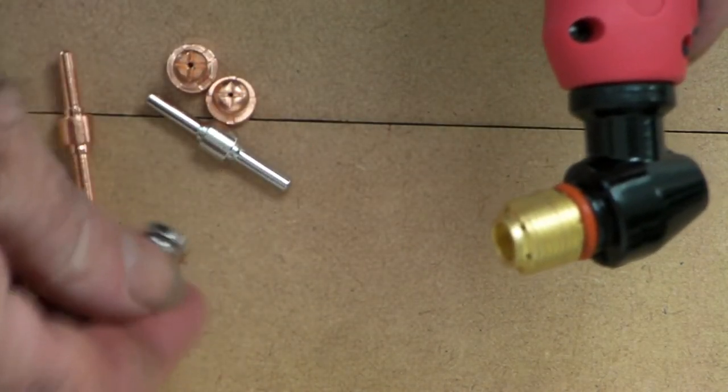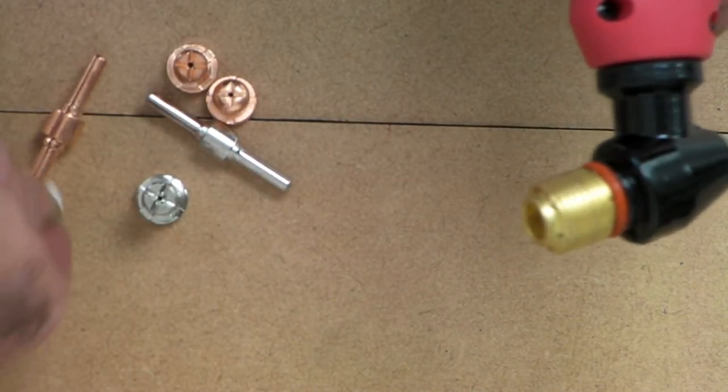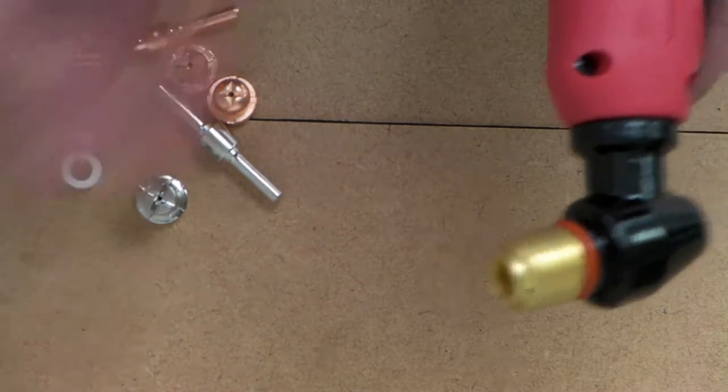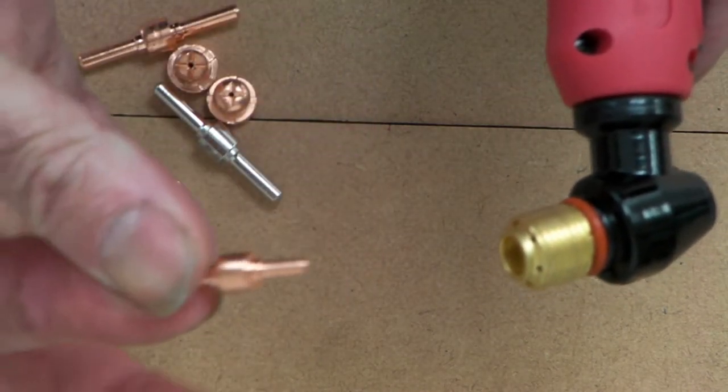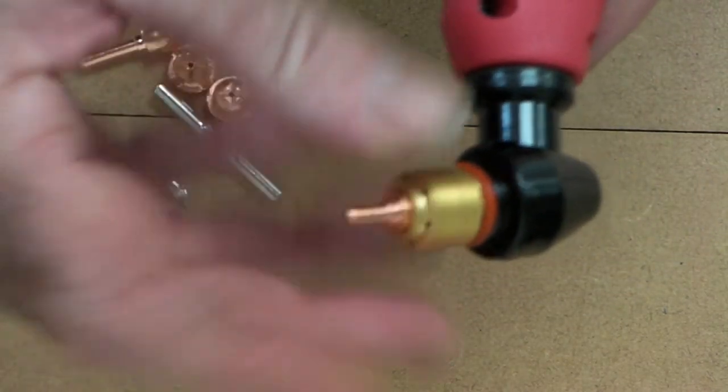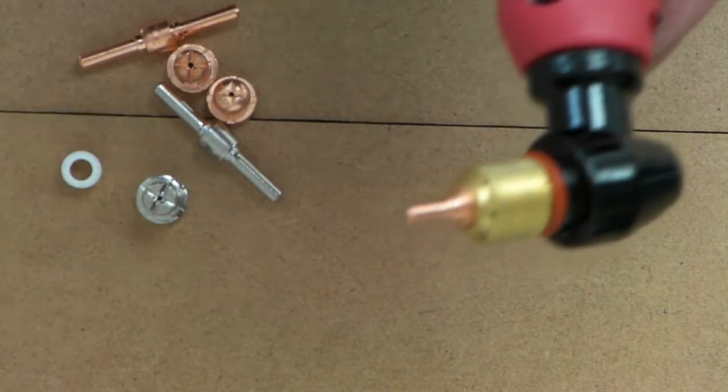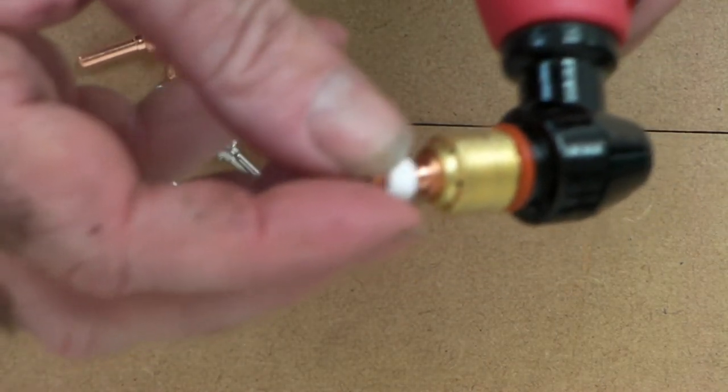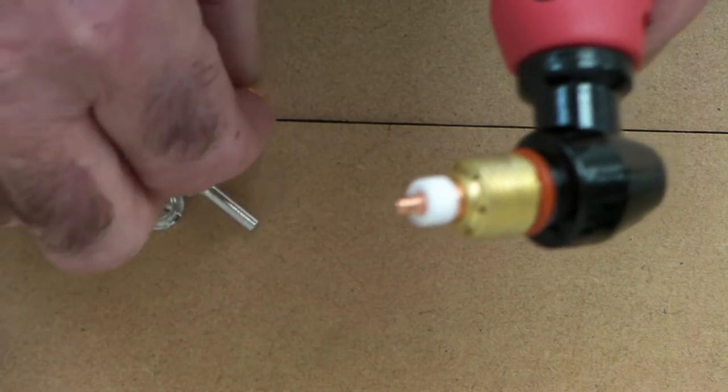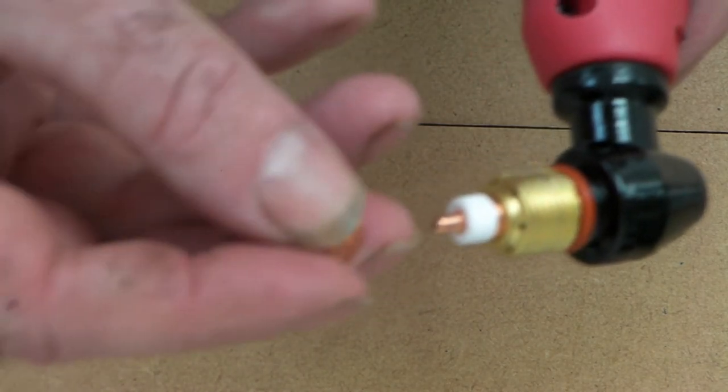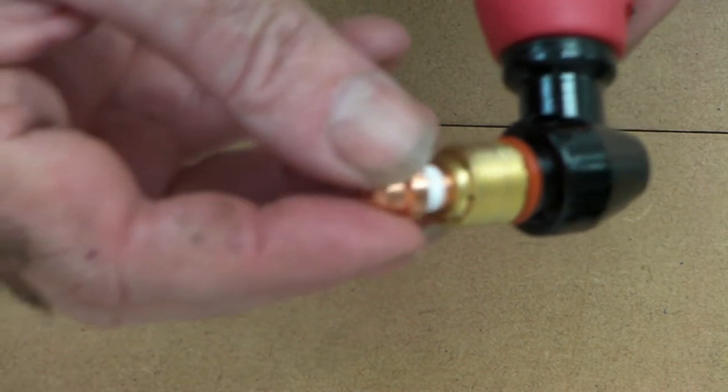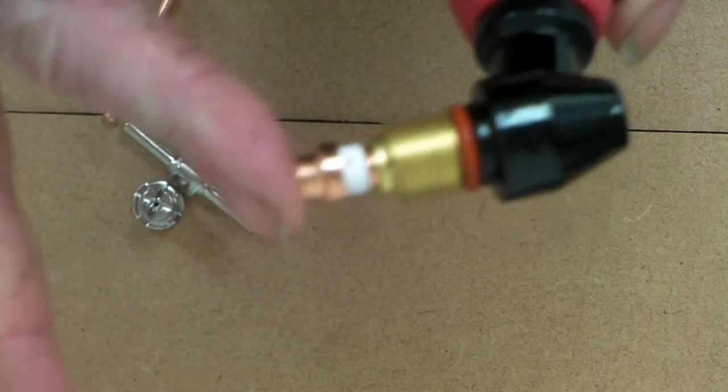So we'll take all these out. Now we put the shorter electrode, which is considerably shorter—see how short that is. Then we put the swirl ring on, and then we put the shorter cutting tip on like so. See how short that is compared to the other one.